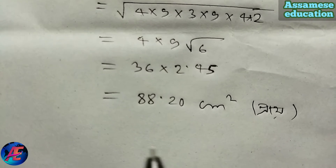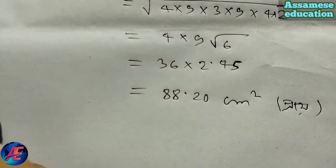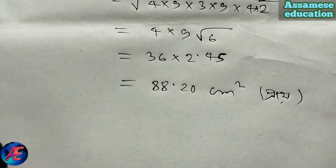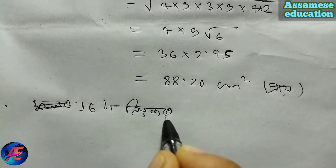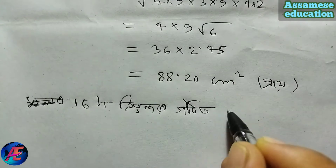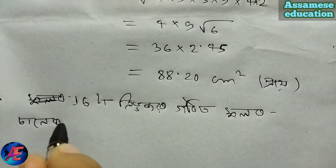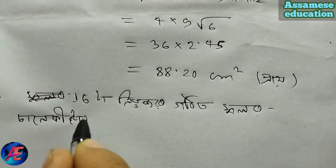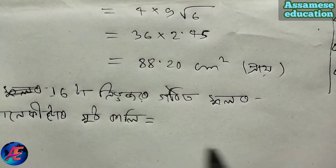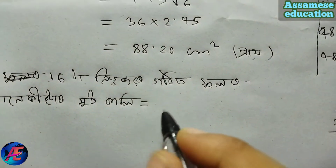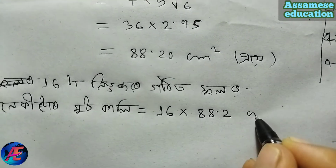So, I am a whole other triangle. So I take a full triangle — the whole other triangle. So the full triangle area is 16 into 88.2 cm square.